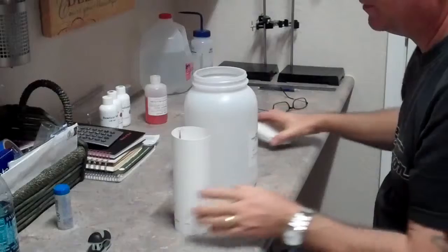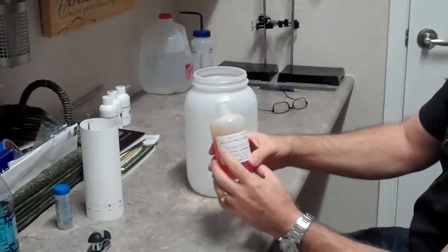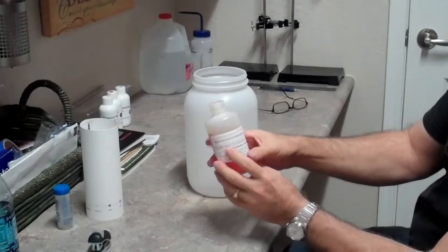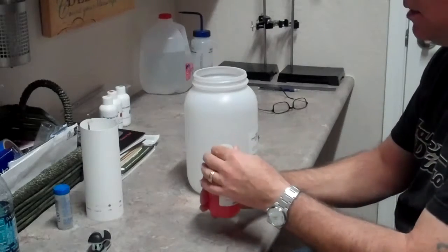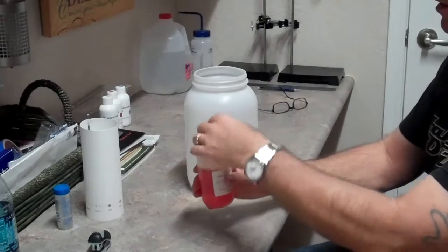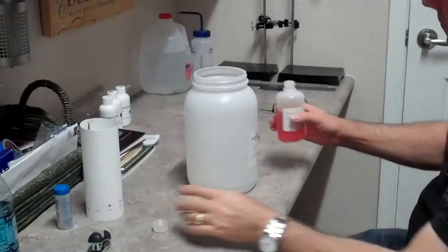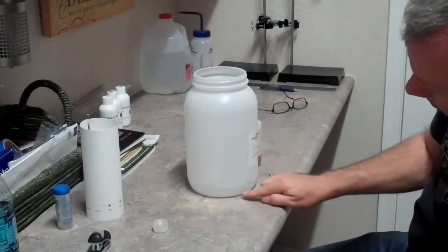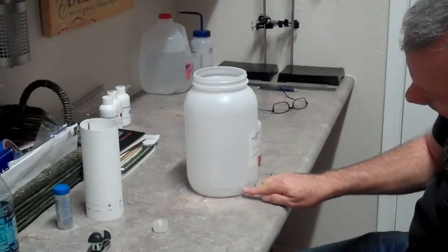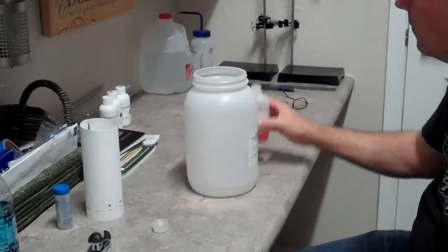We're going to take our one gallon container, take the lid off, and take our solvent developer solution, which does have a pretty strong smell, so you're going to want to do this in a fairly ventilated area. We're going to pour enough of this in here to put about a half inch of solvent in the bottom.